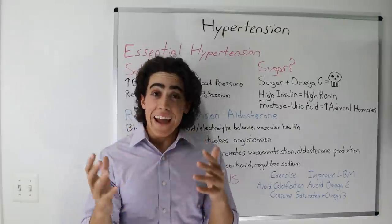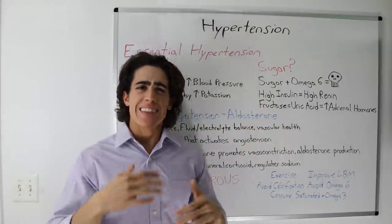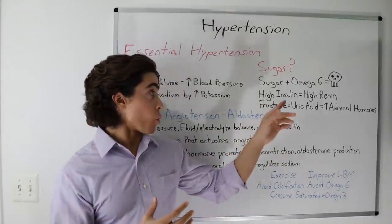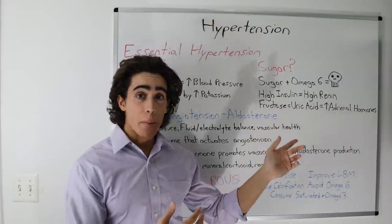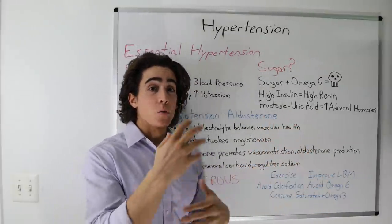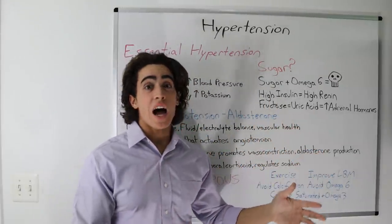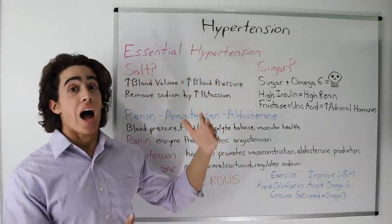One other thing that activates the overproduction of these adrenal hormones is extra uric acid. This relates back to sugar as one component of sugar is fructose and part of fructose metabolism is producing uric acid. So fructose in high amounts equals high uric acid equals high adrenal hormones, resulting in high blood pressure, hypertension.